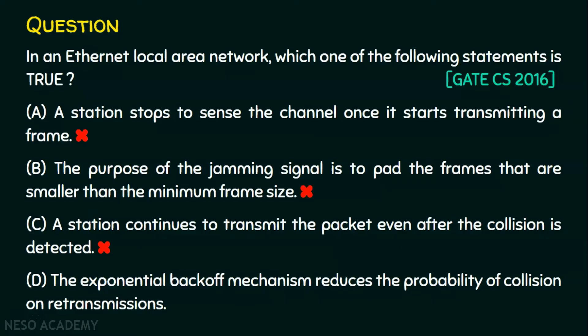And coming to the last option, that is option D. The exponential backoff mechanism reduces the probability of collision on retransmission. Option D is the right answer. We have already seen that the exponential backoff strategy reduces the possibility of collision on retransmission. Let's recollect what is exponential backoff.